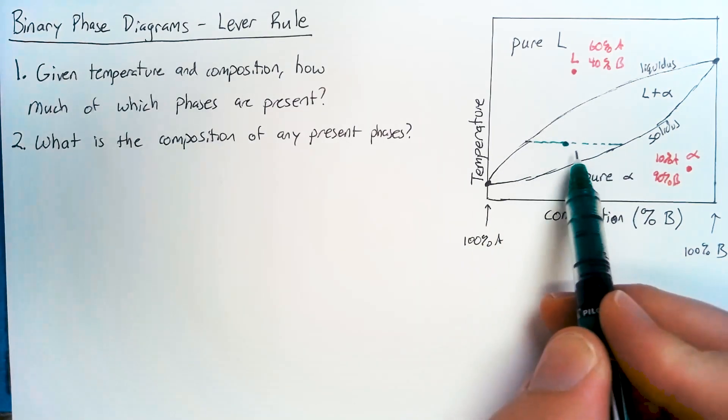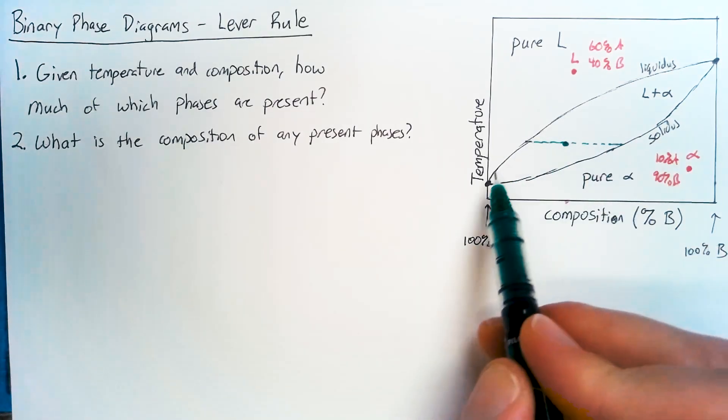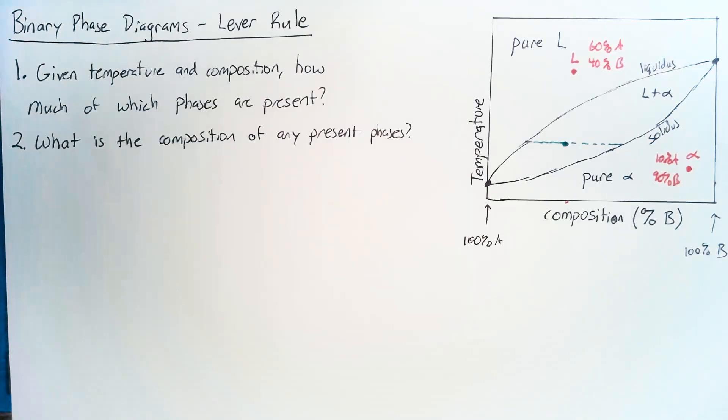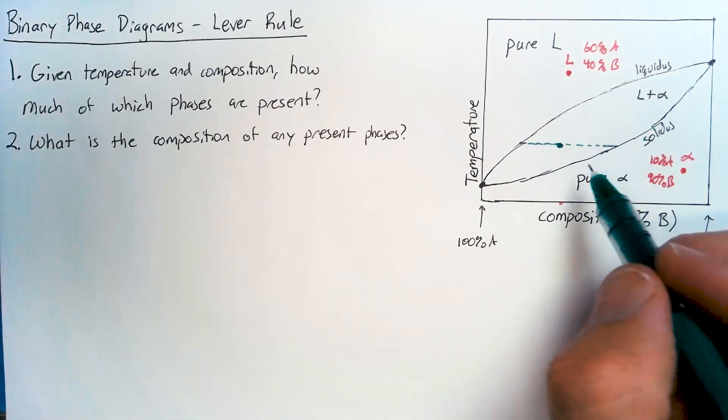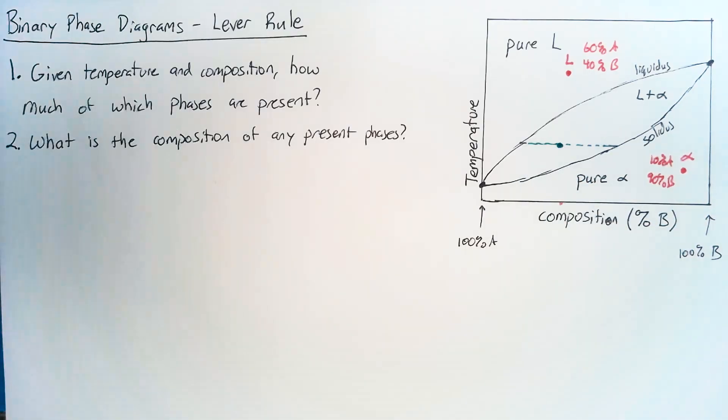We're going to develop what's called a tie line, where we just sketch a line that is perfectly horizontal. We're doing that because both phases, we know that there's liquid and alpha, both of these phases need to be at the same temperature. And the reason for that is because we have this equilibrium assumption. And the only way that works is if everything is the same temperature.